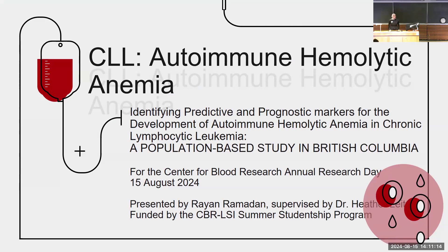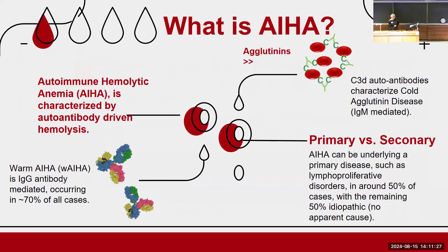My name is Rayanne Ramadan, here to present our study on identifying predictive markers for the development of autoimmune hemolytic anemia, or AHA, in chronic lymphocytic leukemia, or CLL, under the supervision of Dr. Heather Leach. AHA is characterized by autoantibody-driven hemolysis. If it's IgG-mediated, this is known as warm autoimmune hemolytic anemia; if it's C3D autoantibody-mediated, this is cold agglutinin disease. In about 50% of cases, this could result from an underlying lymphoproliferative disorder. In this study, we focus on AHA secondary to CLL and how we can predict it.